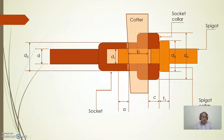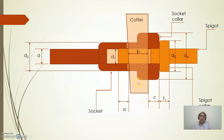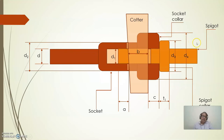In order to lock the joint between the spigot and socket, we insert a key — that key is known as the cotter. We make a slot in the socket and also a slot in the spigot. The taper cotter has one straight side and one tapered side — taper of 1 in 48. D is the diameter of the rod end.